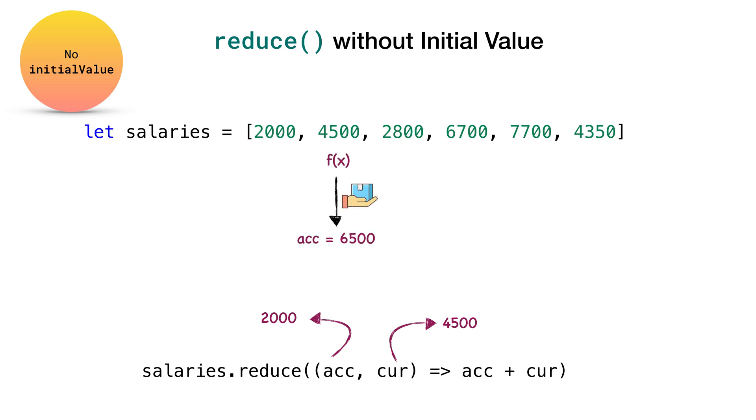Which means the reducer function starts executing from the second element in the array and after the execution, it returns the result of 6500 which is the sum of accumulator and the current value. From there onwards, accumulator will start accumulating the result which will be used in the subsequent executions. Finally, when all the elements in the array are finished, a single value output is returned which is the total sum of 28,050.